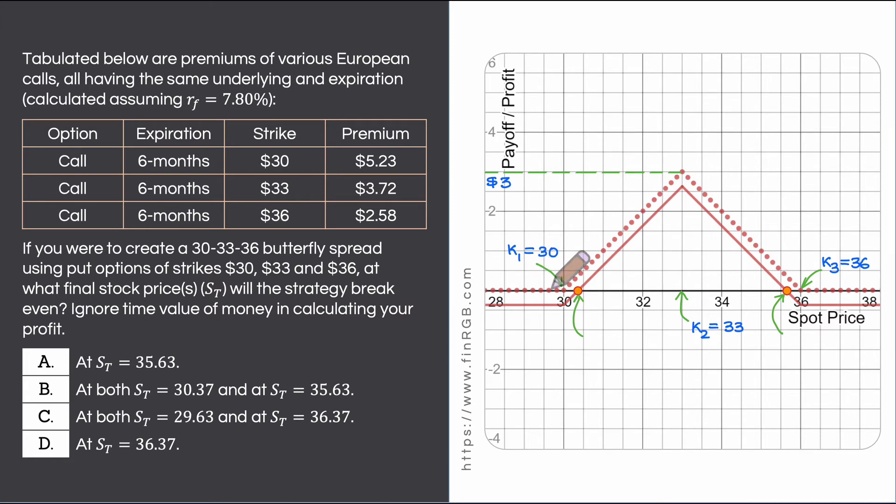The dotted plot is the payoff offered by this butterfly spread. Please note the strikes involved: 30, 33 and 36.